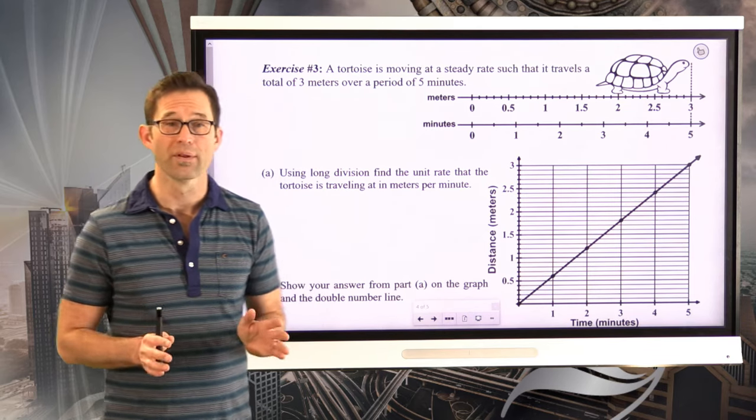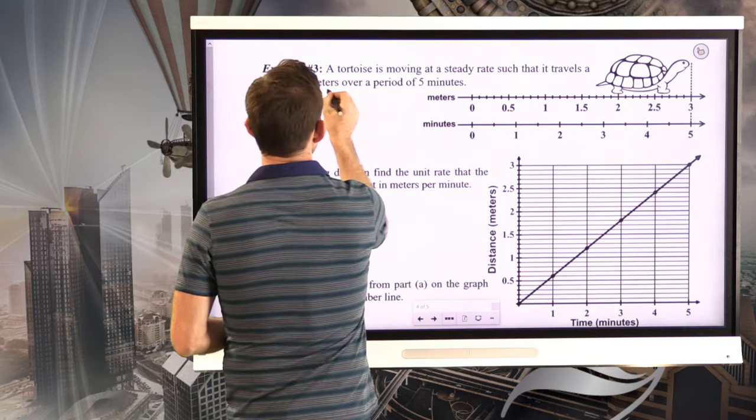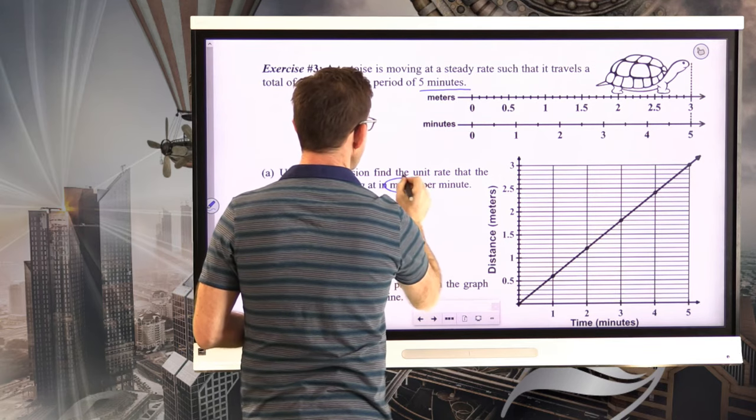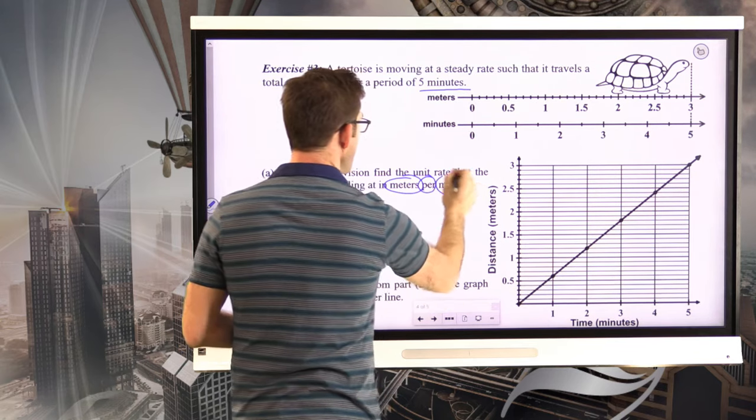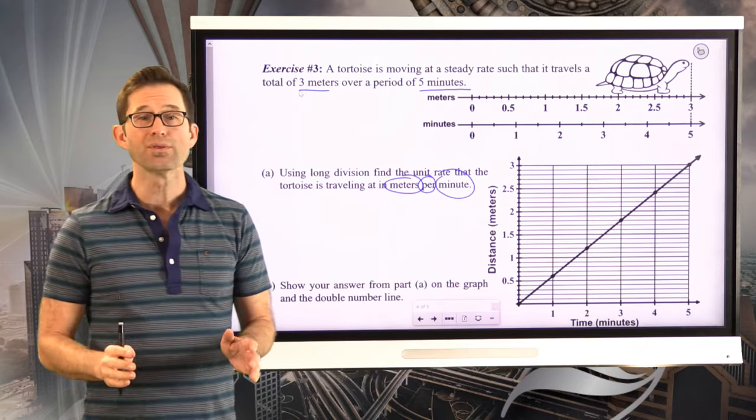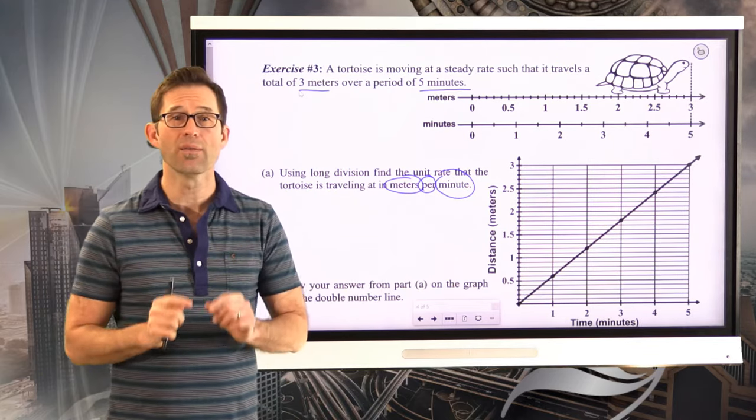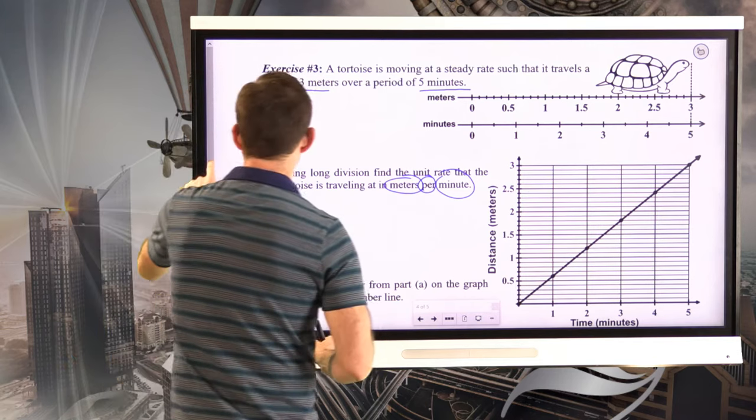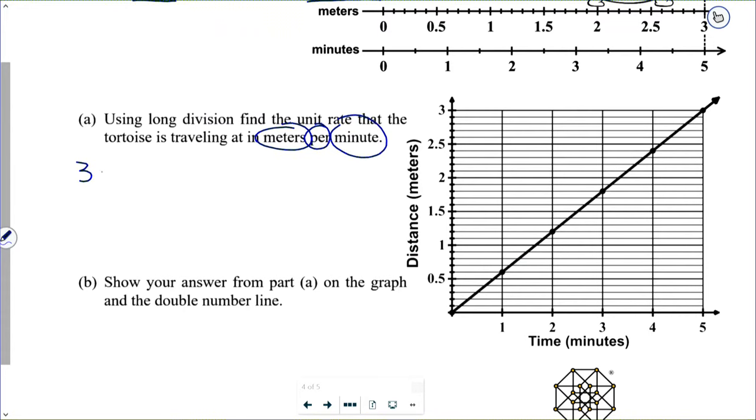Now, we have to be careful about this. Three meters over five minutes, and we want to know the rate in meters per minute. That means the meters, the distance measurement, has to be in the numerator, and the time measurement has to be in the denominator. In other words, we start by setting up the following ratio: three meters per five minutes.